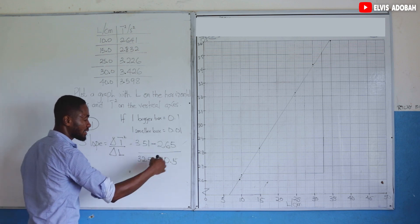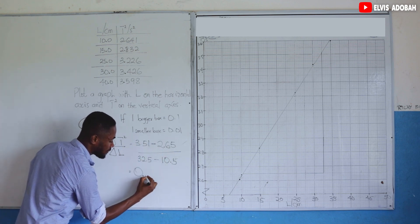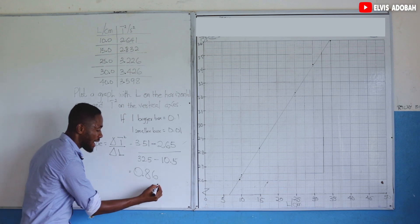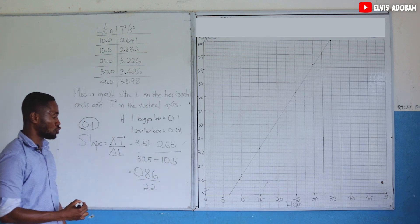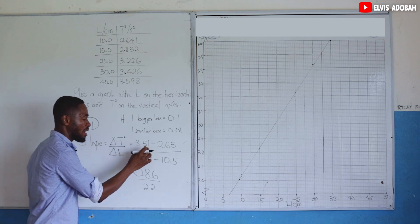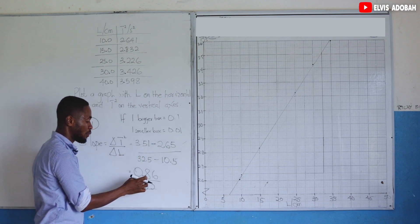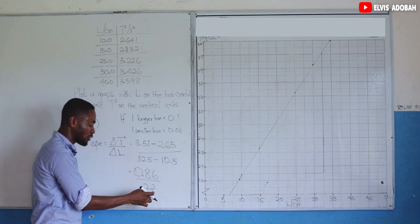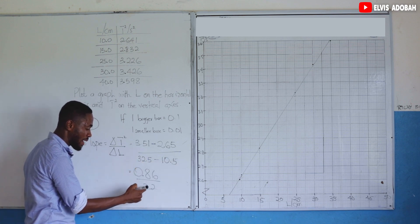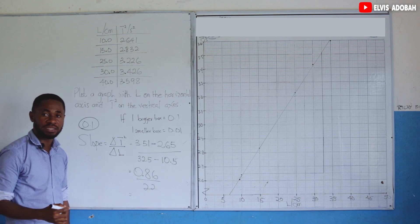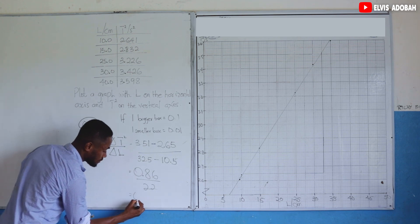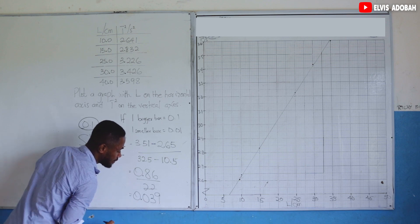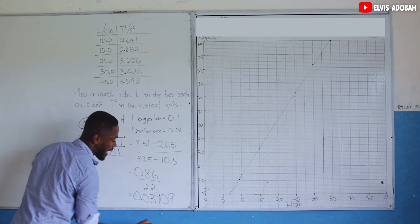This one will give us 0.86 divided by 22. So 3.51 minus 2.65 will give us 0.86, and then 32.5 minus 10.5 will give us 22. And when we divide this by that, we are going to get 0.03909.